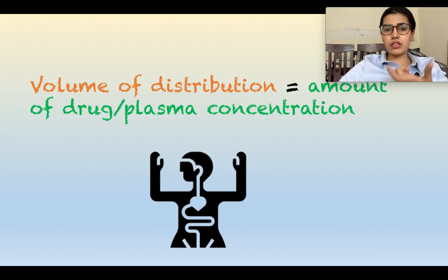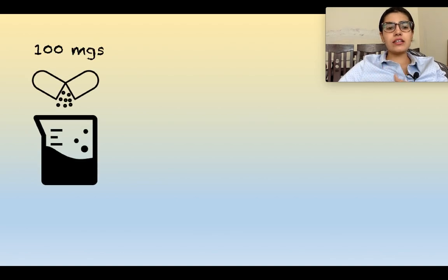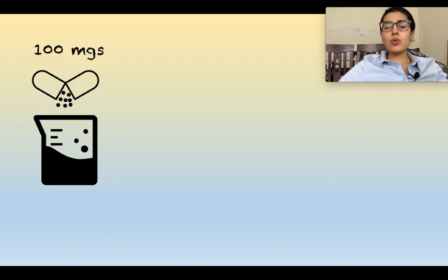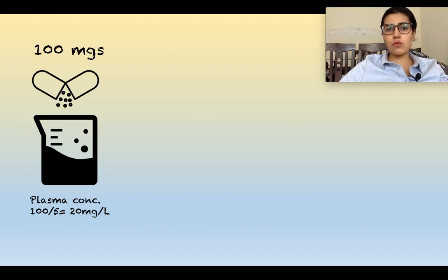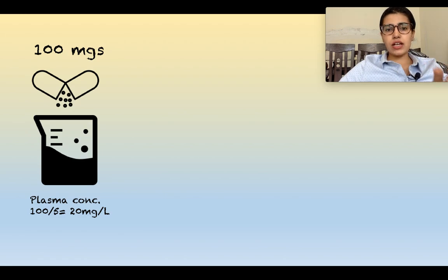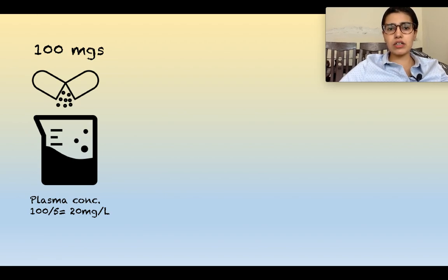To understand the term 'apparent,' we will explain it with three scenarios. Consider a beaker shown in the figure with a volume of 5 liters, and you are giving 100 mg of the drug. The plasma concentration will come out to be 100 mg divided by 5 liters, which equals 20 mg/L — each liter of volume contains 20 mg of drug.